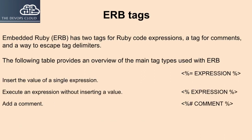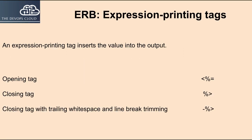Embedded Ruby, ERB, has two tags for Ruby code expressions, a tag for comments, and a way to escape tag delimiters. The following table provides an overview of the main tag types used with ERB. To insert the value of a single expression, use <%=  expression  %>. To execute an expression without inserting a value, use <%  expression  %>. To add a comment, use <%#  comment  %>. An expression printing tag inserts the value into the output. The closing tag with trailing whitespace and line break trimming uses -%>.